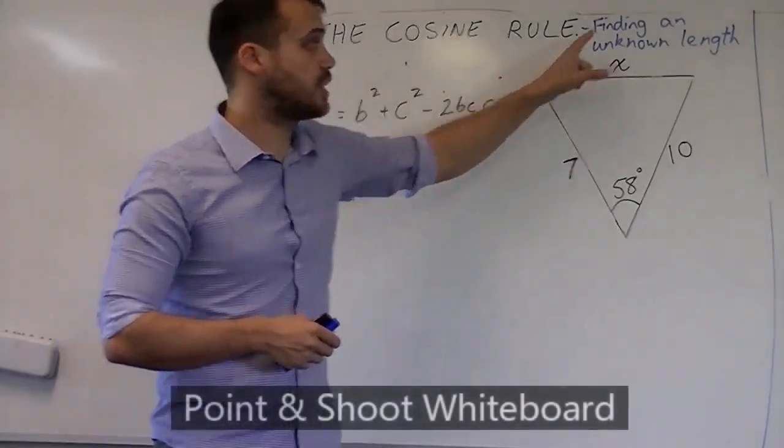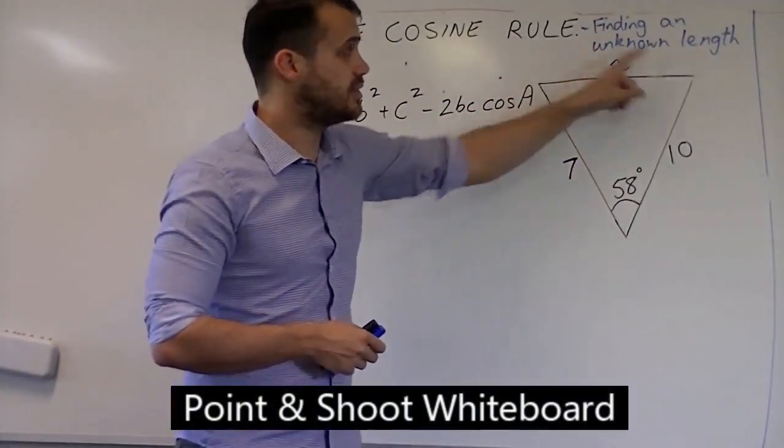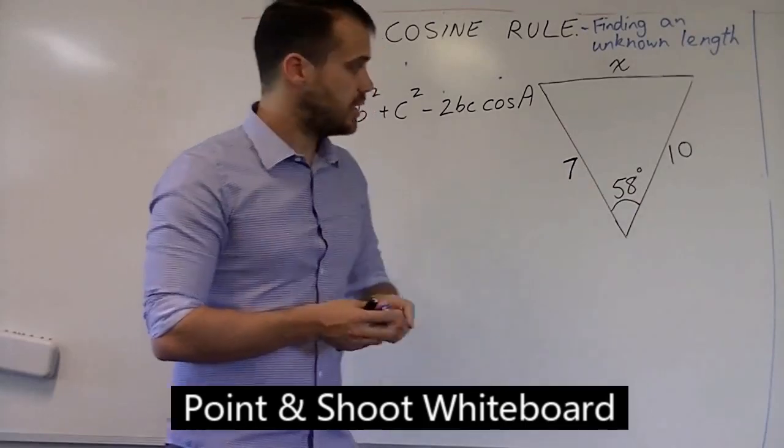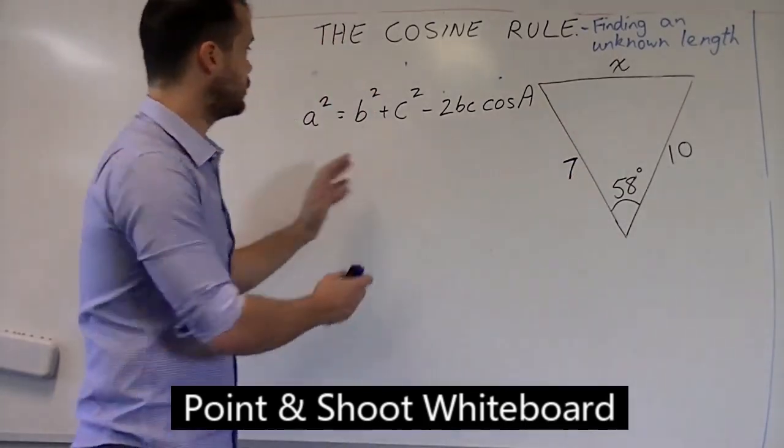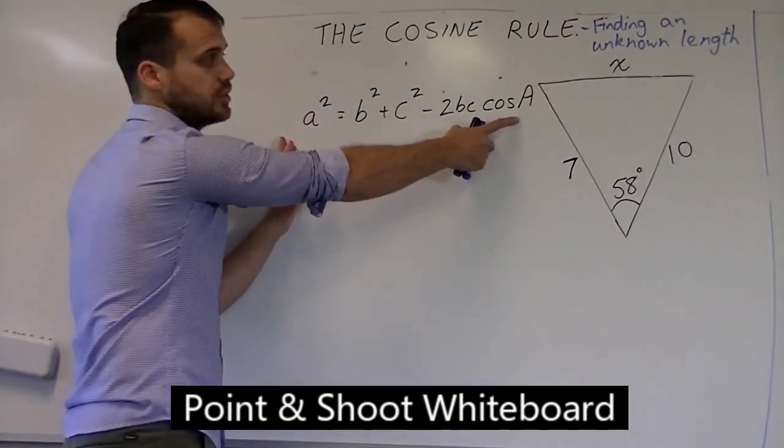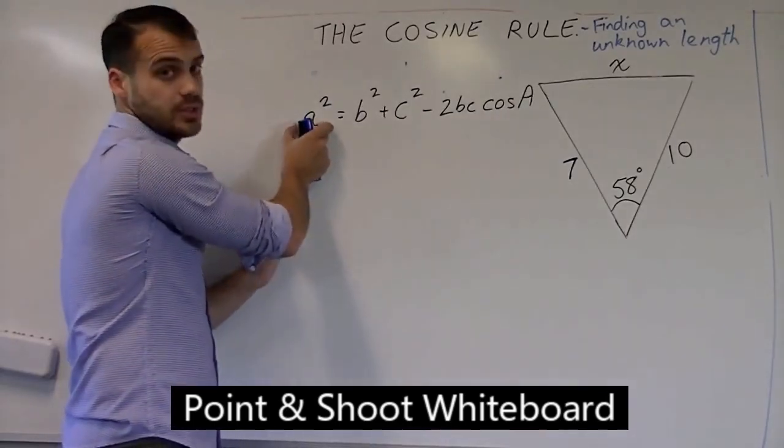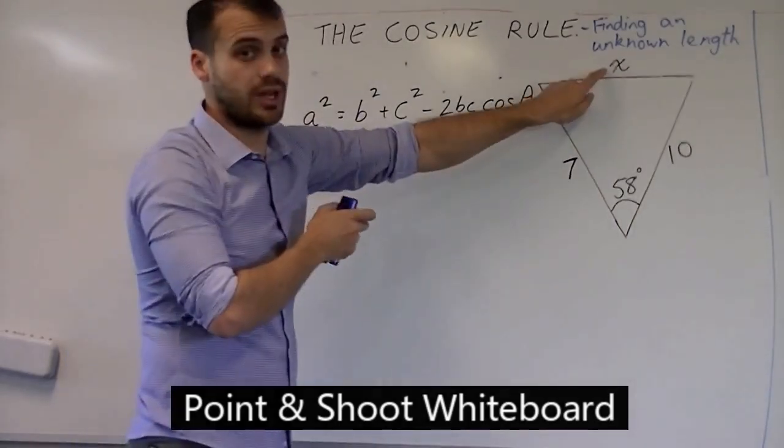We're going to use the cosine rule to find the unknown length in this triangle here. When you label this triangle, here's our formula first of all. We can see that we're trying to find A squared. We're trying to find A.